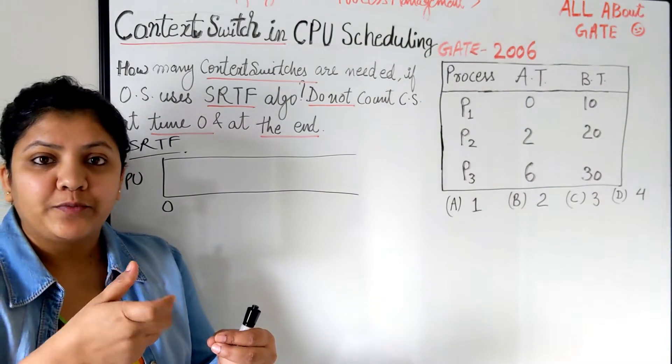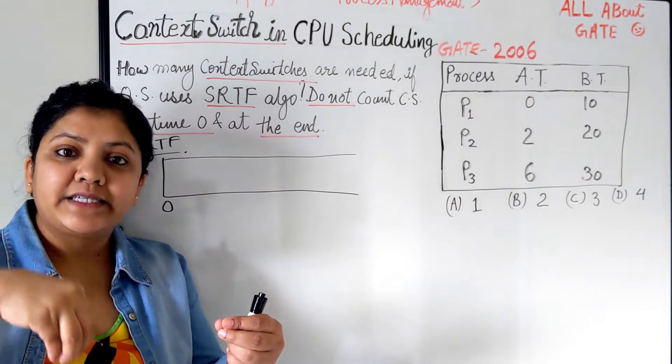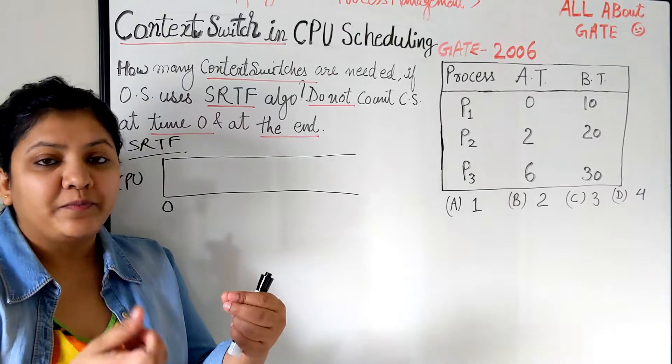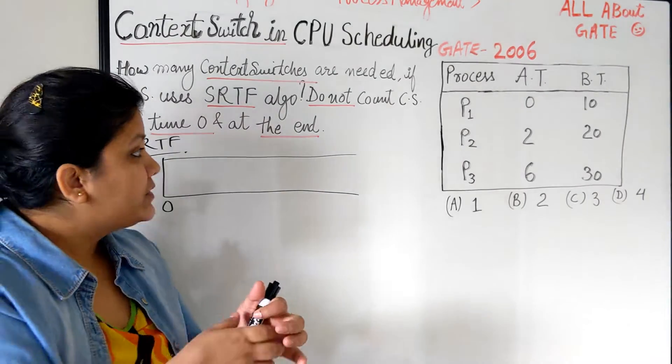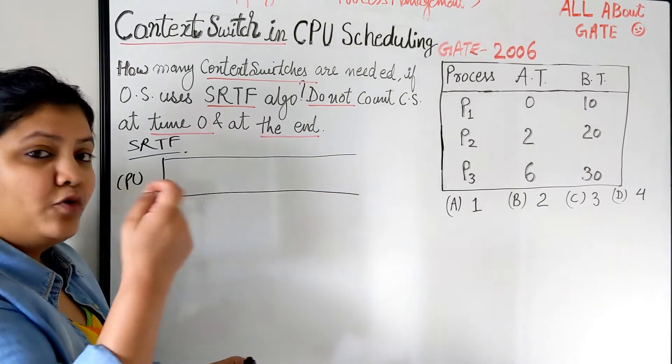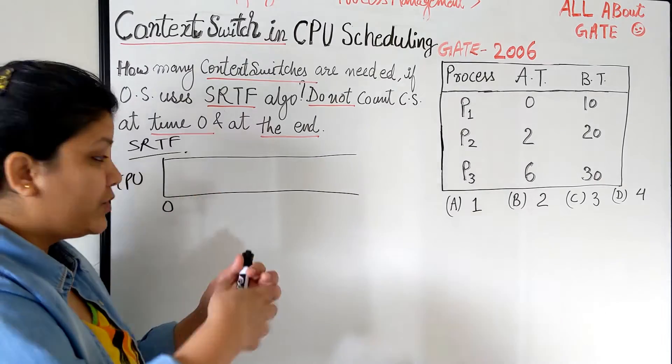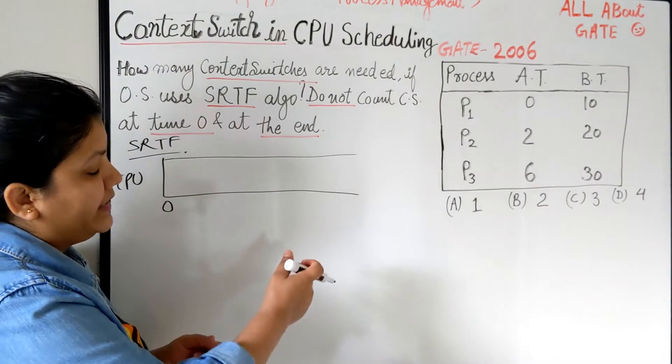And this job is done by the dispatcher which is the operating system process. So that's the moment you have to count - how many times you are switching the process. So this was about the theoretical concept. Now let's apply that.